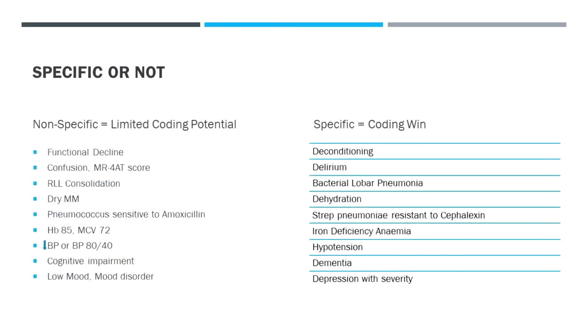Hemoglobin 85 means quite severe anemia, but you need to actually write 'anemia' or 'iron deficiency anemia' if that's the cause. Low blood pressure is a clinical finding, not a diagnosis — hypotension is. Cognitive impairment does not code well, but dementia does. Likewise, low mood or mood disorder implies something, but you need to write the diagnosis — depression or likely depression — and you can specify how severe.